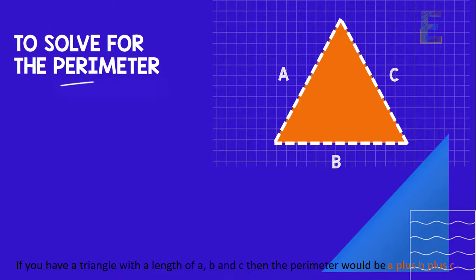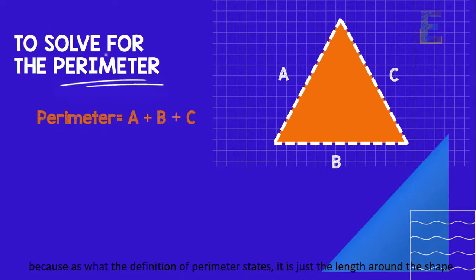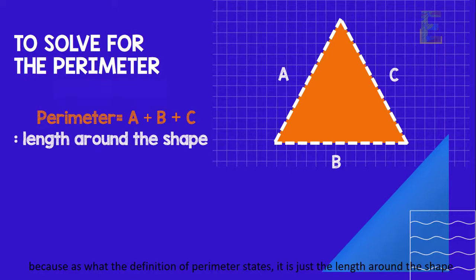If you have a triangle with a length of A, B, and C, then the perimeter would be A plus B plus C. Because as what the definition of perimeter states, it is just the length around the shape.